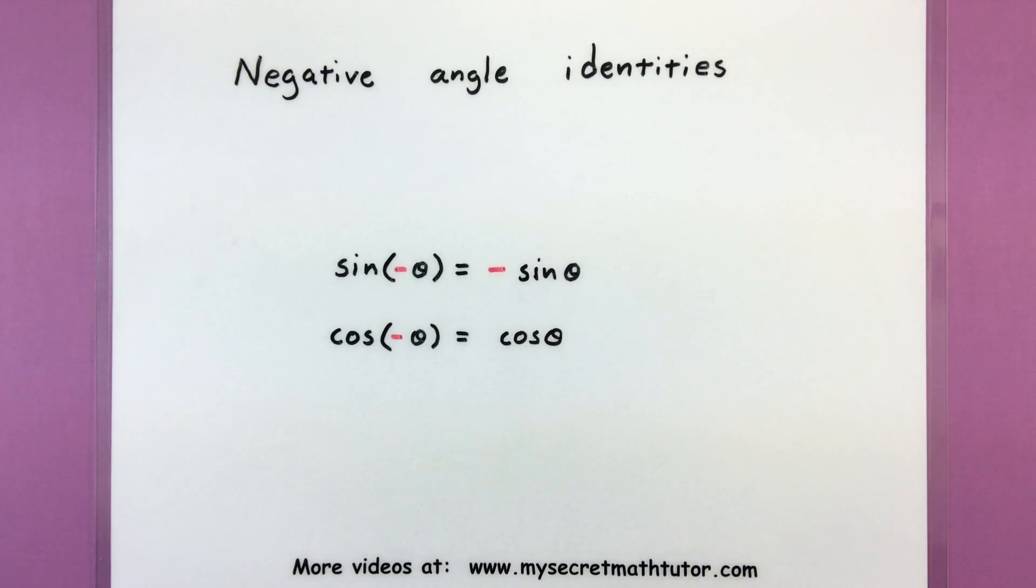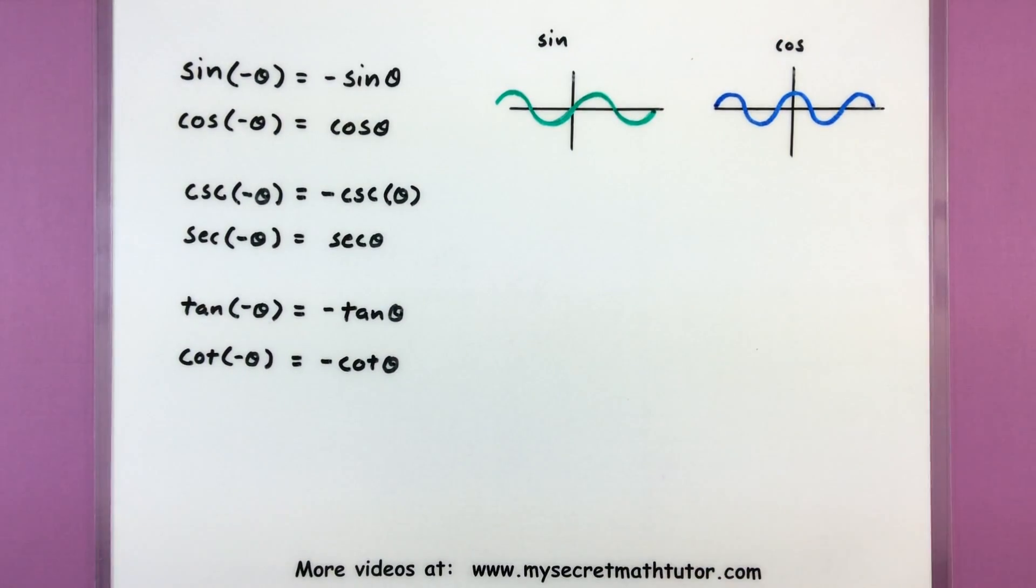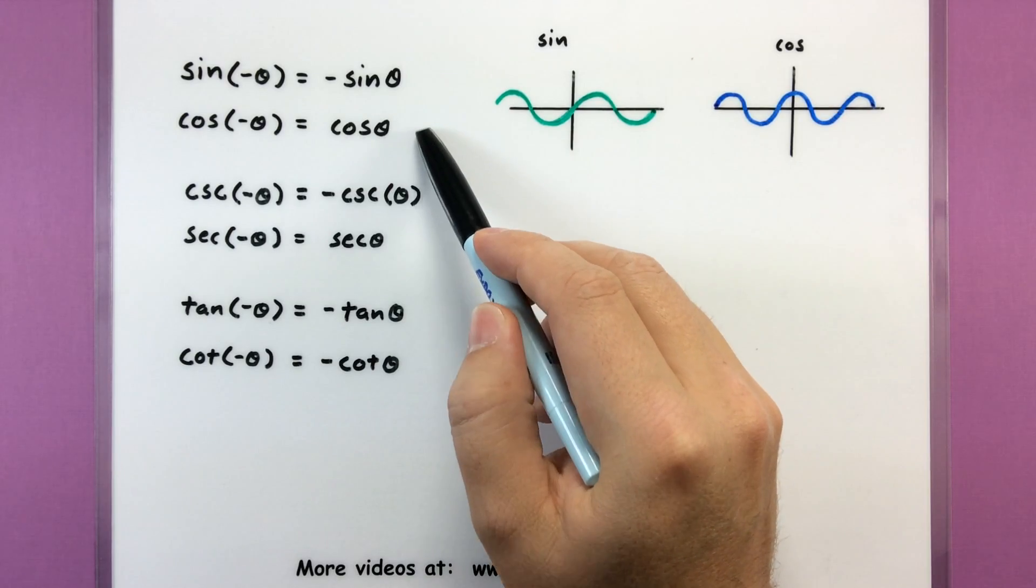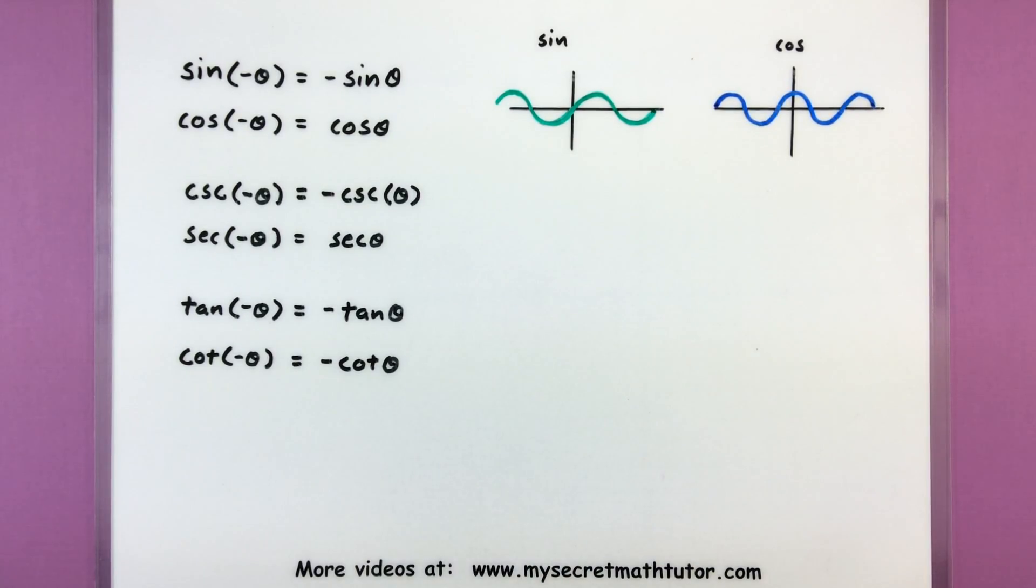Now to understand why these work, it's all about looking at the symmetry of the function itself. So we're going to explore a little bit about these two and then see why the other negative angle identities work the way they do.